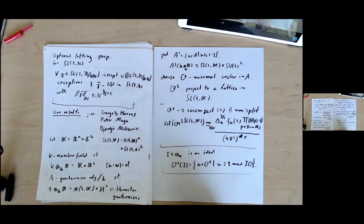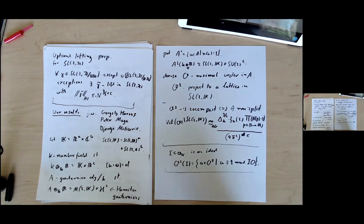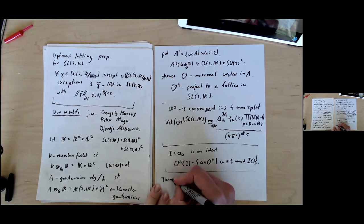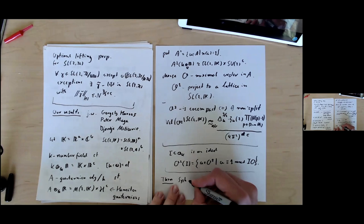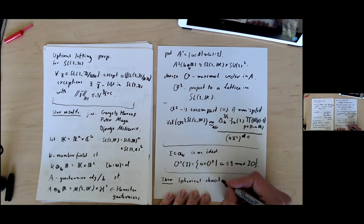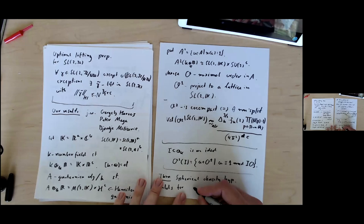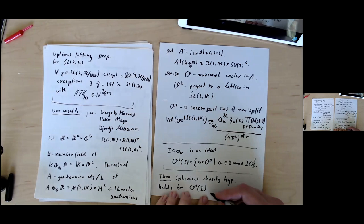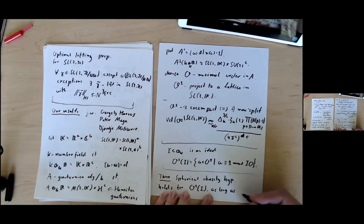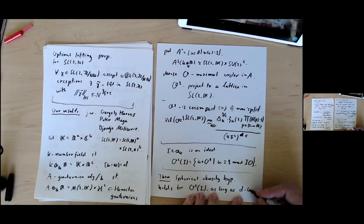If I inside OK, think of integers of K, is an ideal, I put O1 I as the set of elements in O1 that are congruent to one modulo I times O. I think I introduced all the notions that we need to state one of our main results. In short, what I can write is that this theorem: spherical density hypothesis holds for the family of lattices of form O1 I as long as degree of K over Q is bounded.